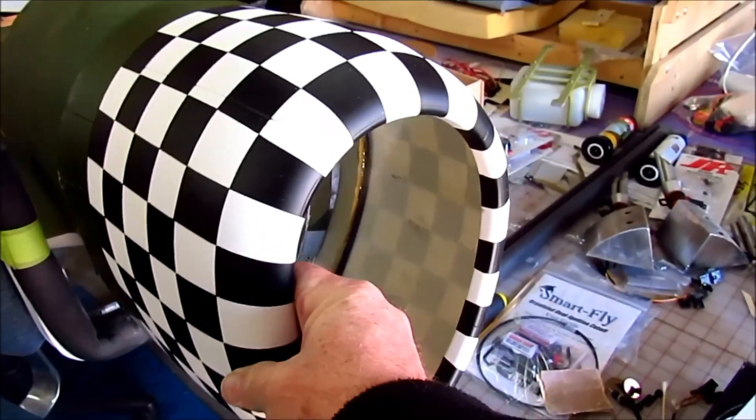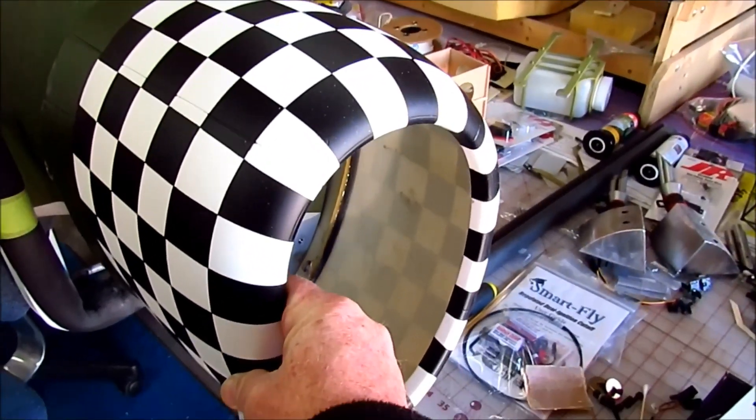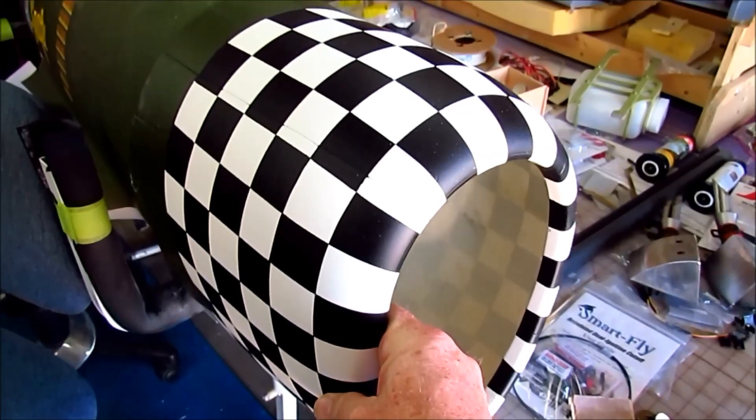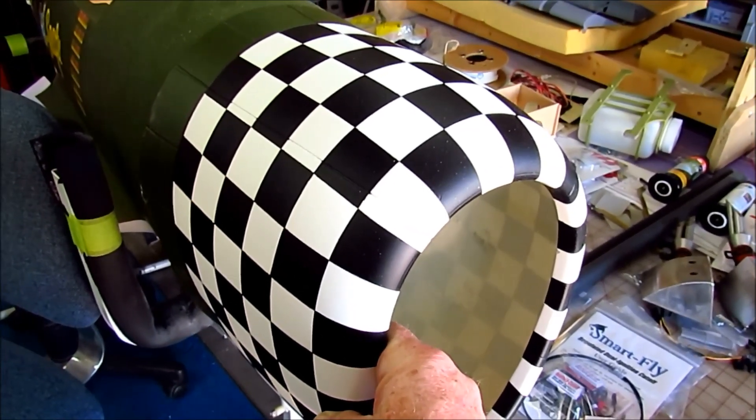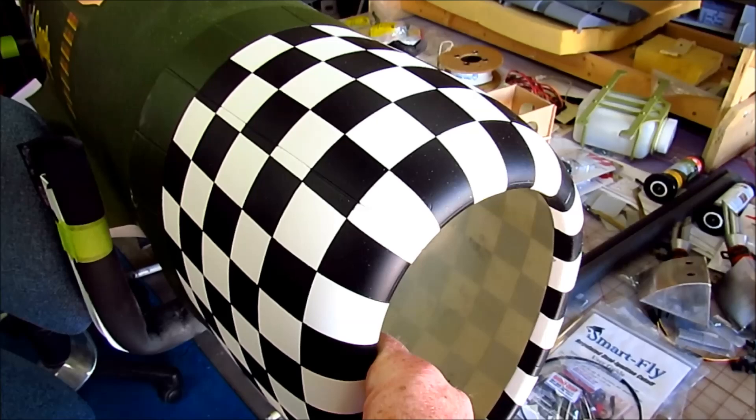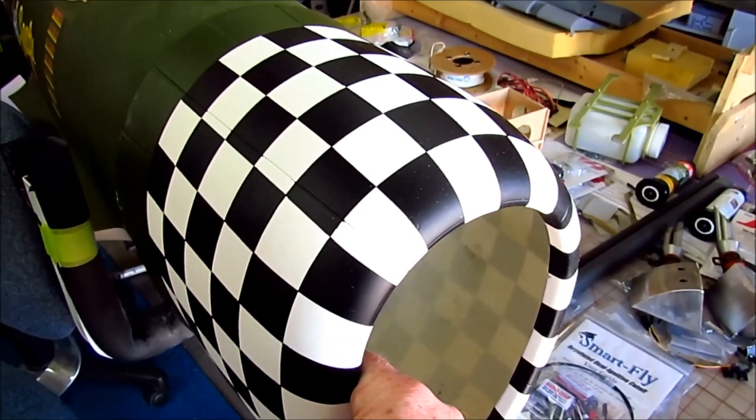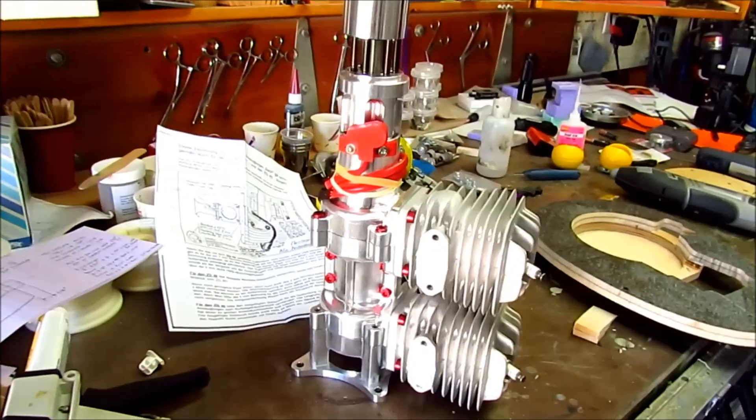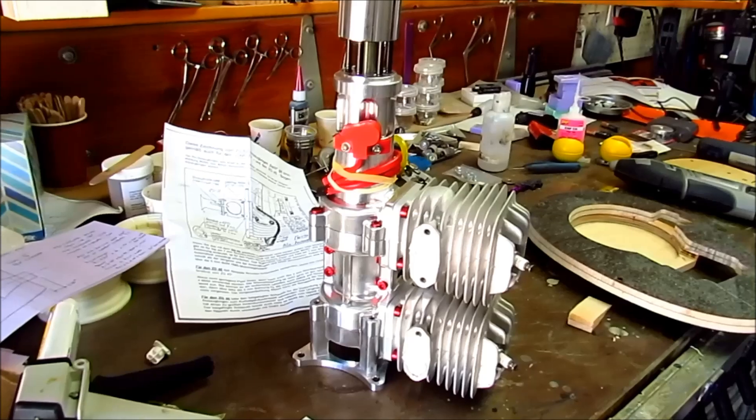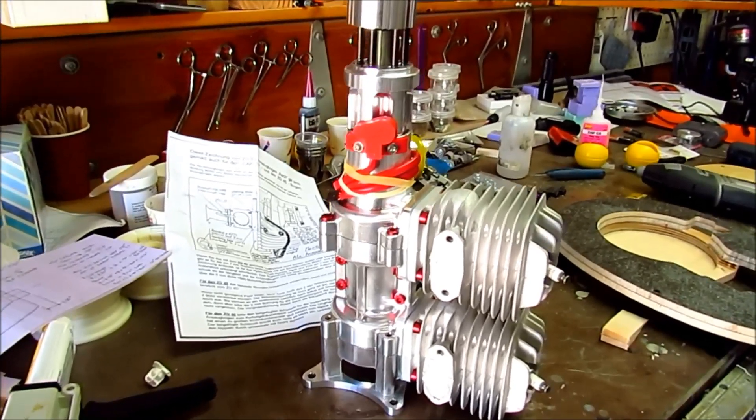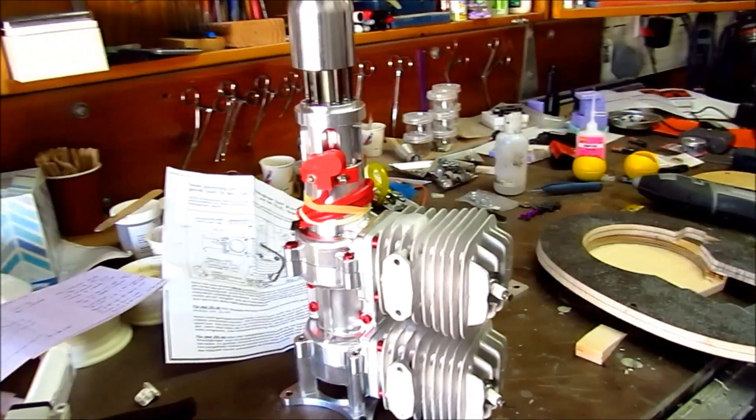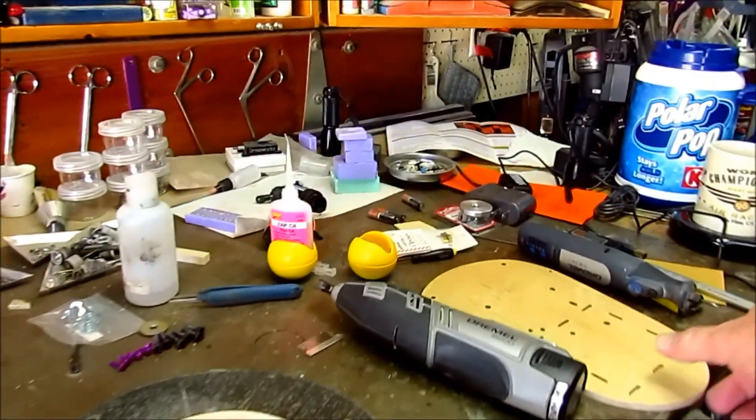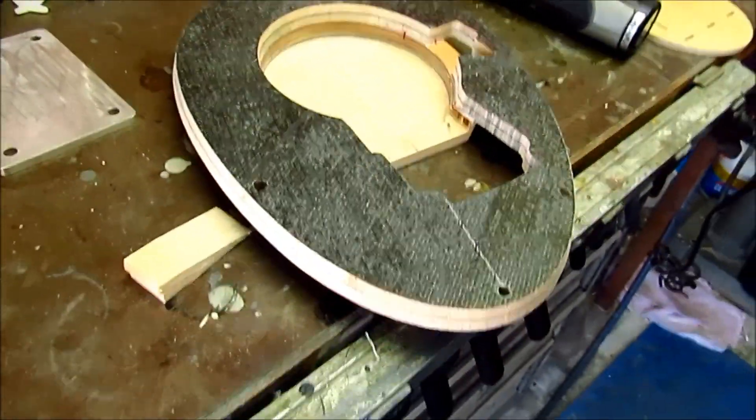But I didn't buy that engine. So if you use the preset firewall position and the motor they want you to use, then you'll have the right prop clearance. But I didn't do that. I bought that engine. So that's a DA100, and it's a little bit longer. So I had to make a new firewall.